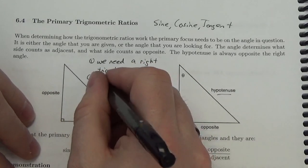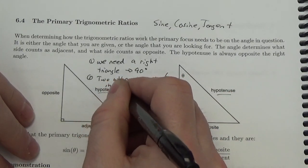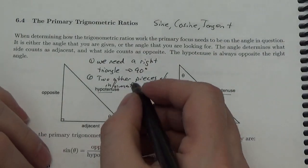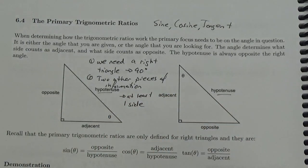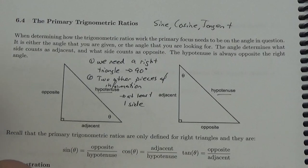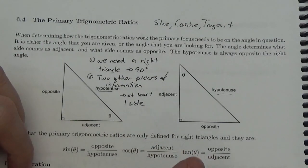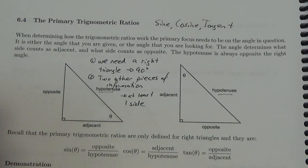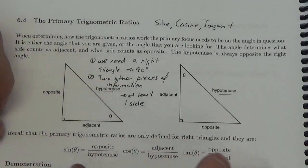Then we need two other pieces of information — that might be an angle and a side, or two sides. You have to have at least one side, because if all you're given is angles, then the triangle can be whatever size you want — that doesn't give you enough information. Now, once you've got an angle, trigonometry really does rest on identifying the angle, whether the question is asking you for an angle or asking you to find a side. It's the angle that helps us define the ideas of opposite and adjacent, which are so key to trigonometry.